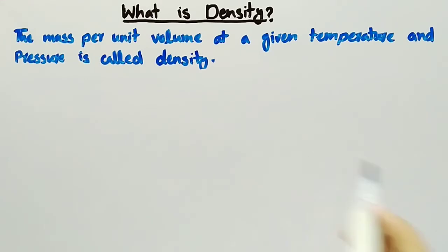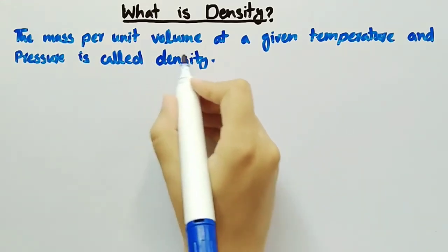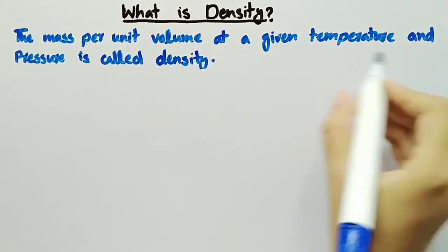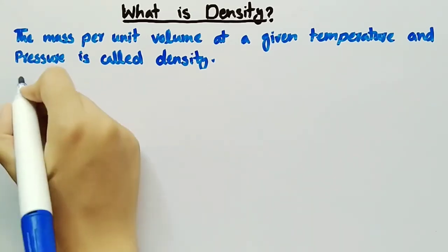Scientifically, we can say that the mass per unit volume at a given temperature and pressure is called density.